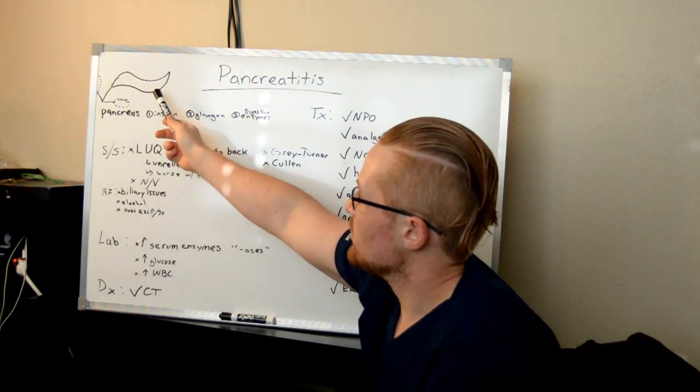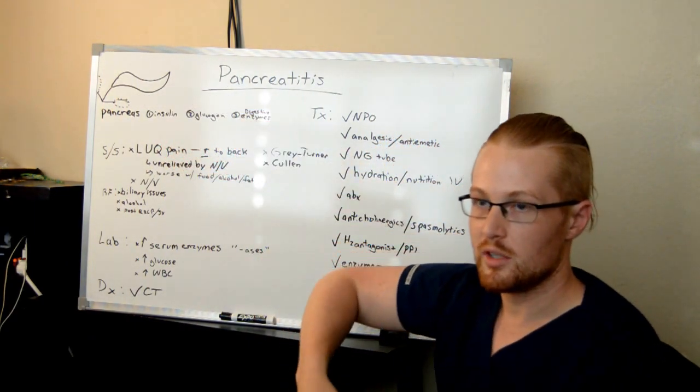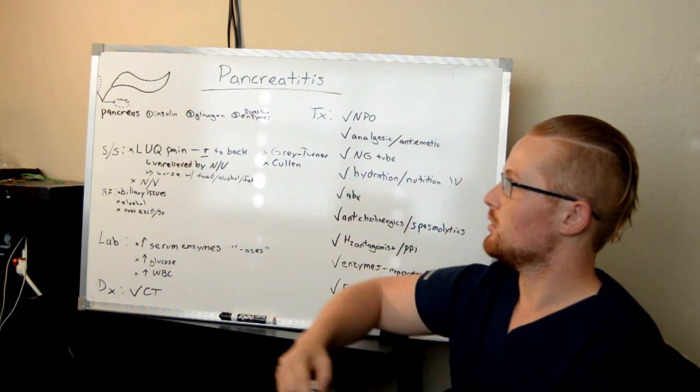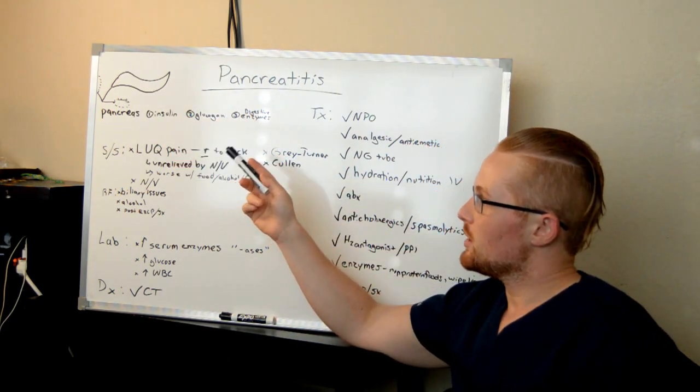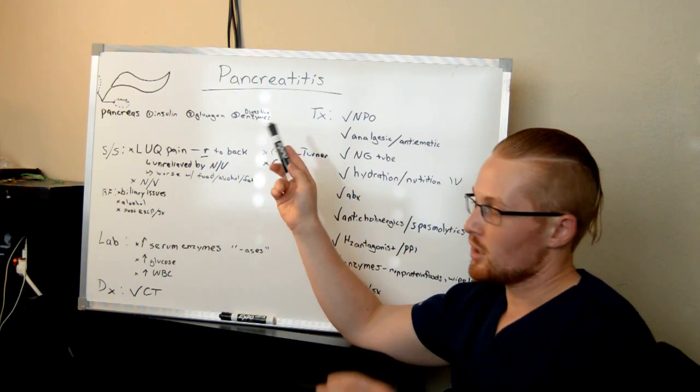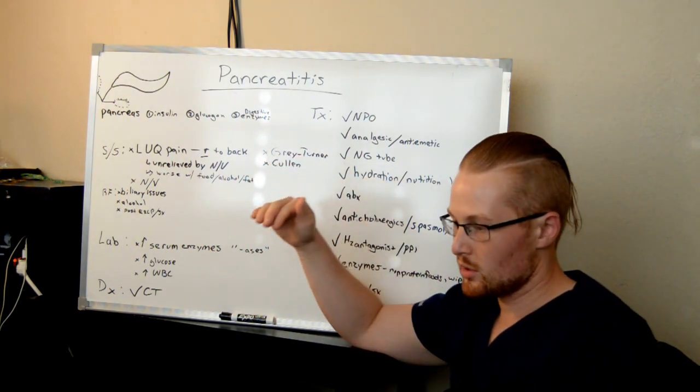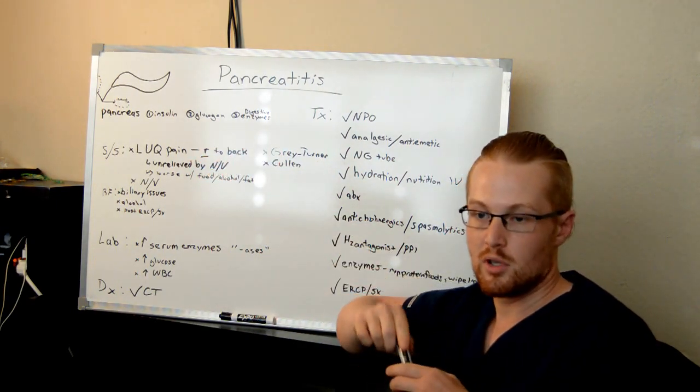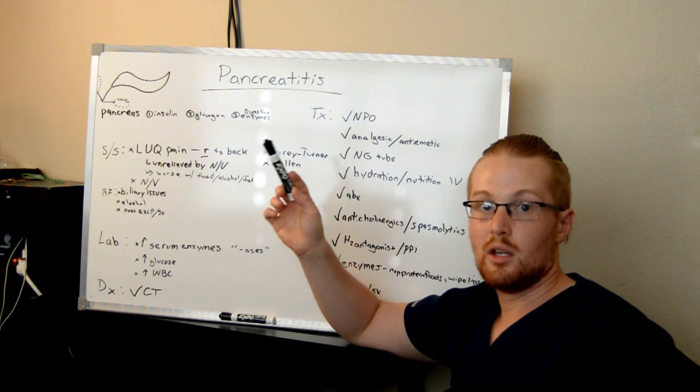So here's the pancreas, and it is located within the abdomen, and it is connected via biliary ducts to the gallbladder and the liver. Those biliary ducts are where the pancreas can release most of its enzymes that will work their way along with the bile and other enzymes to the intestines.